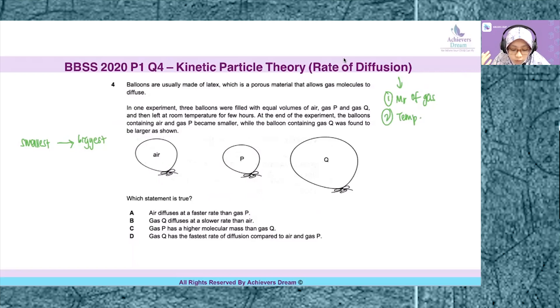So let's read question 4. Balloons that are usually made of latex, which is a porous material that allows gas molecules to diffuse. In one experiment, three balloons were filled with equal volumes of air, gas P and Q. So take note that initially the balloons, they are all of the same size.